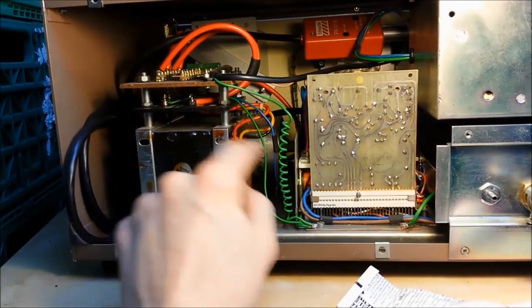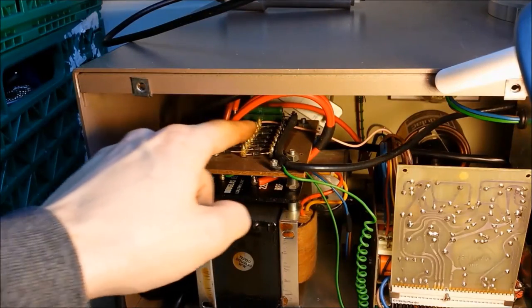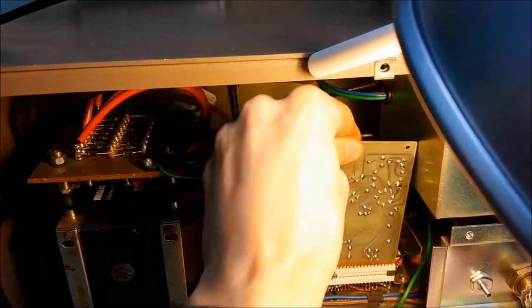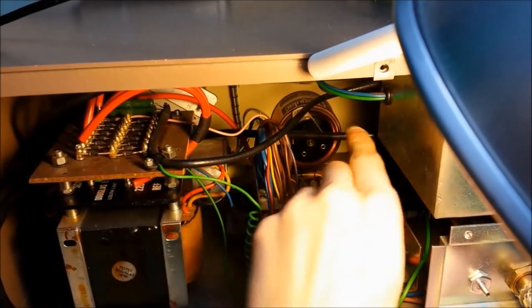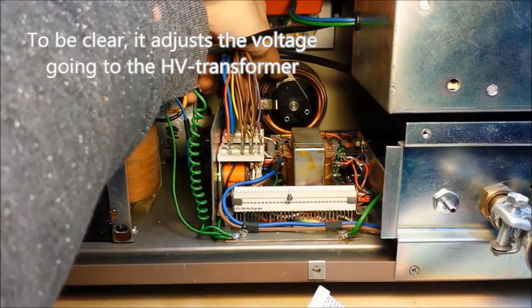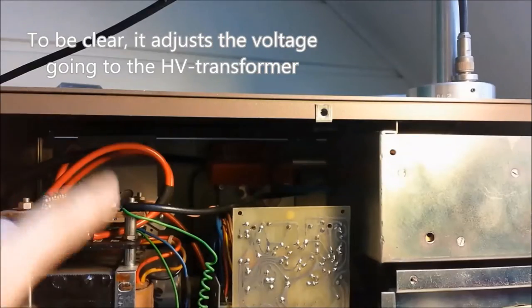On the left there we see the transformer that steps up the voltage. And on top we can see the diodes for rectifying high voltage output. I don't know how well you can see it, but here we have a tiny variac that adjusts the input to the transformer. The variac is a knob on the front panel if that's not clear. And that's how the voltage is adjusted.